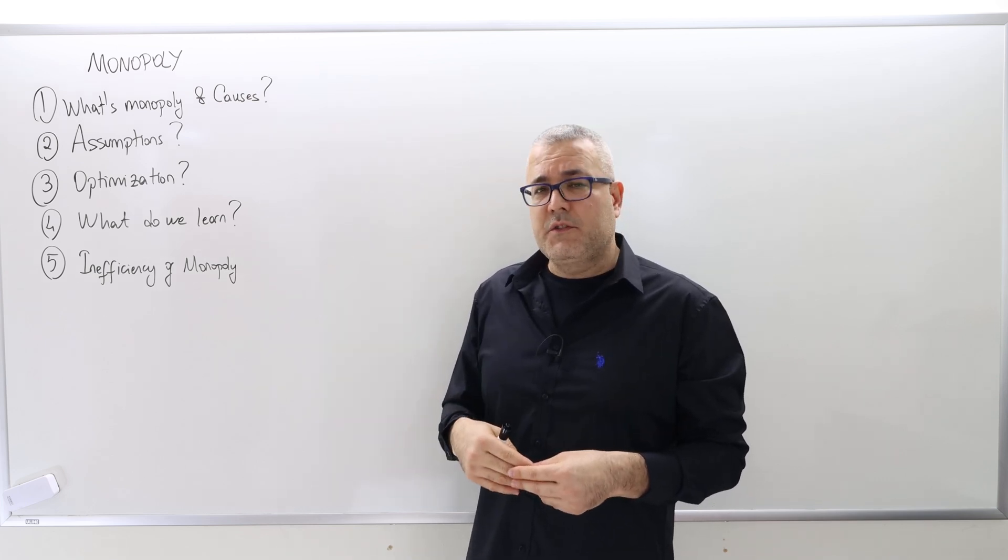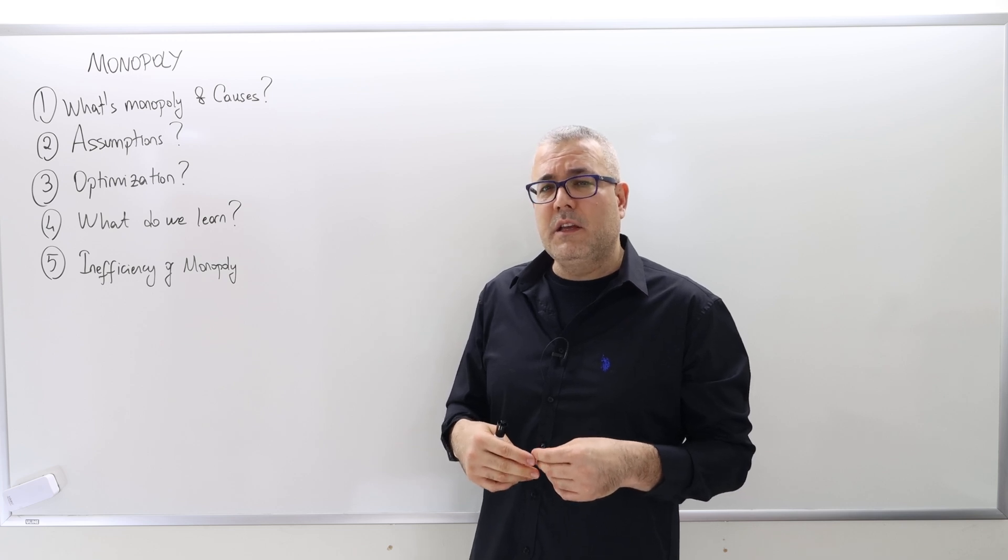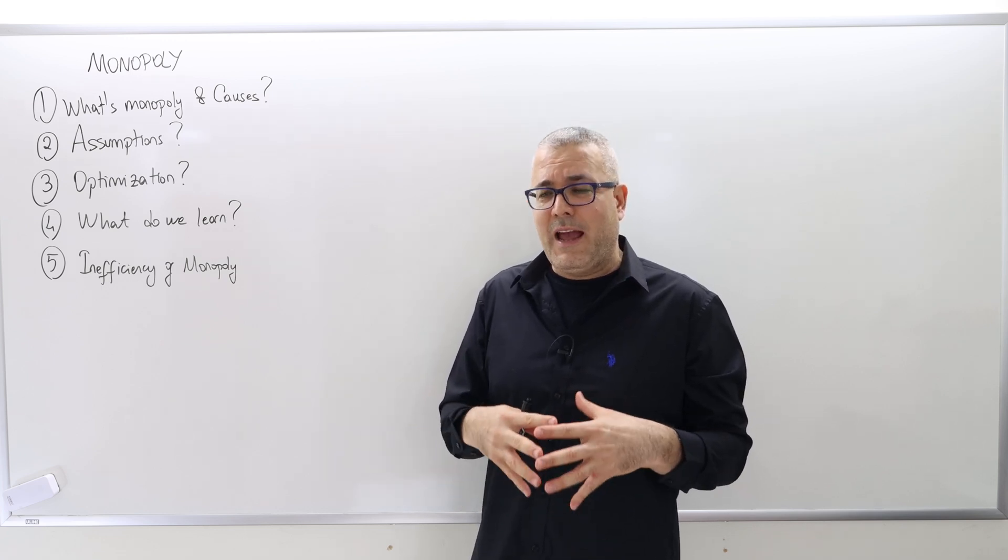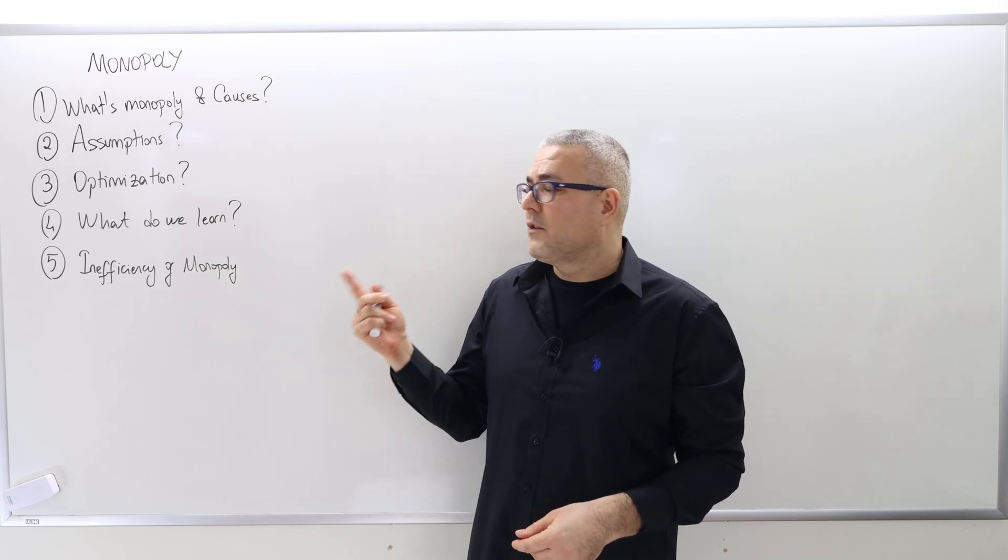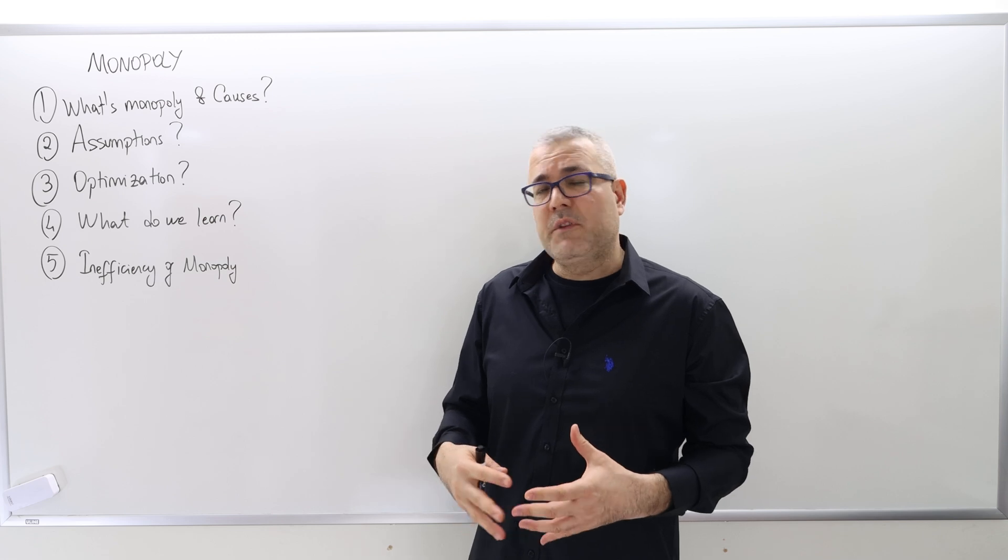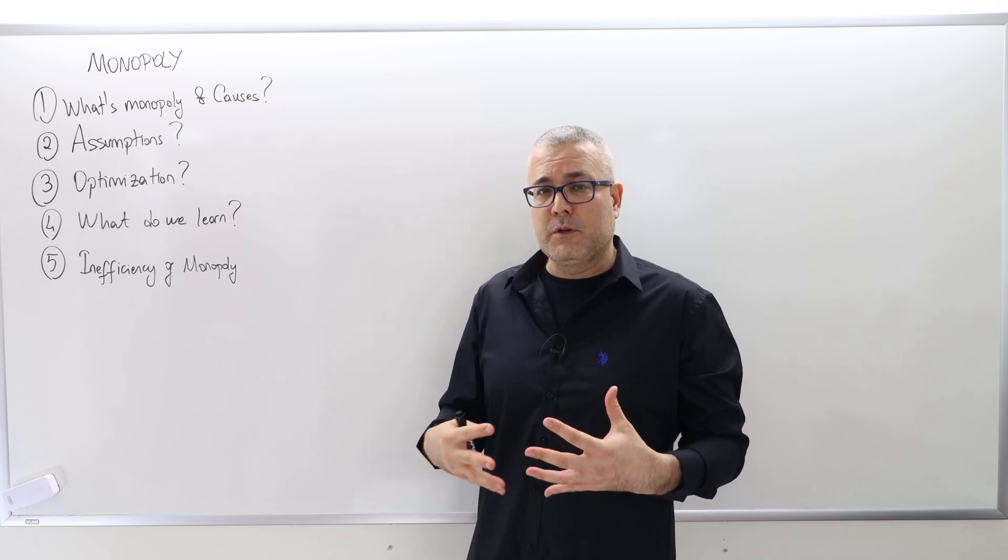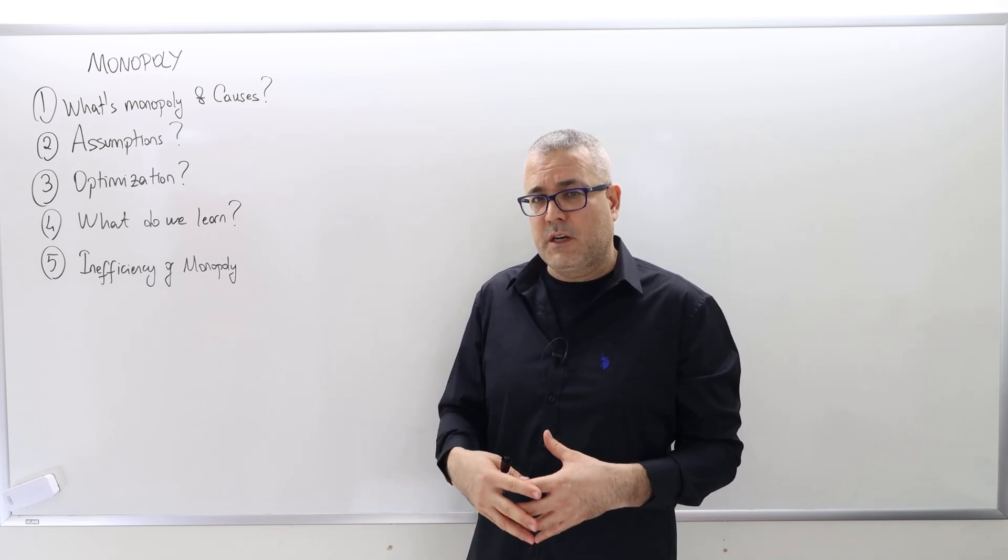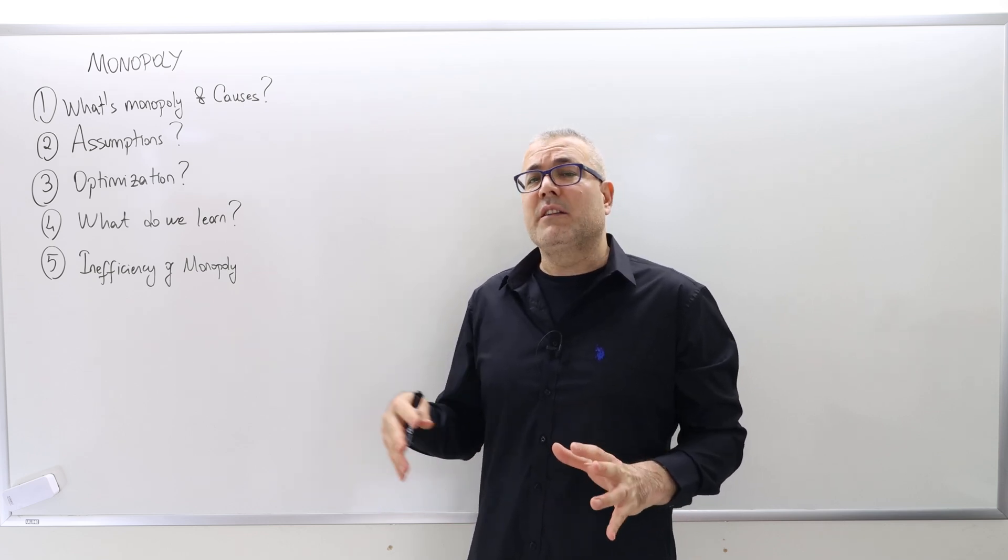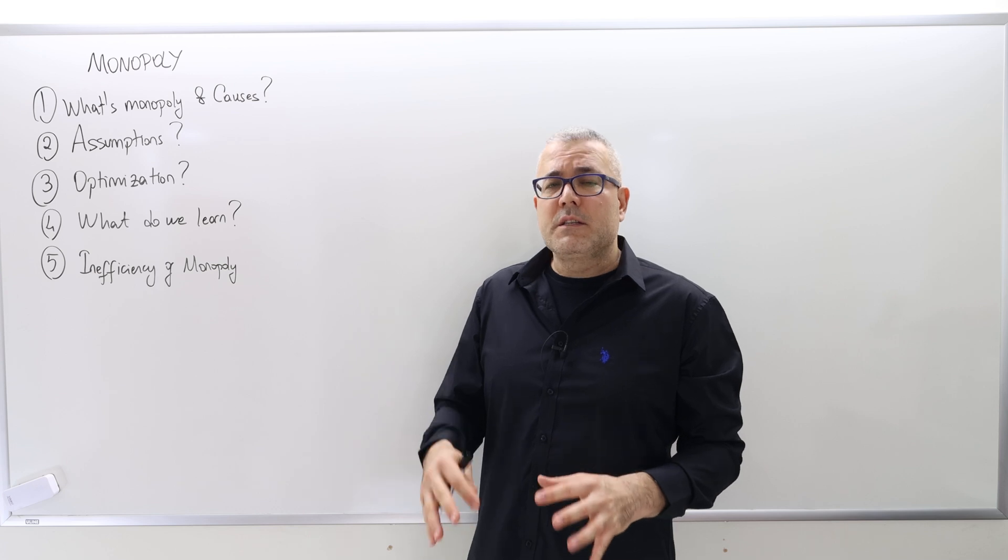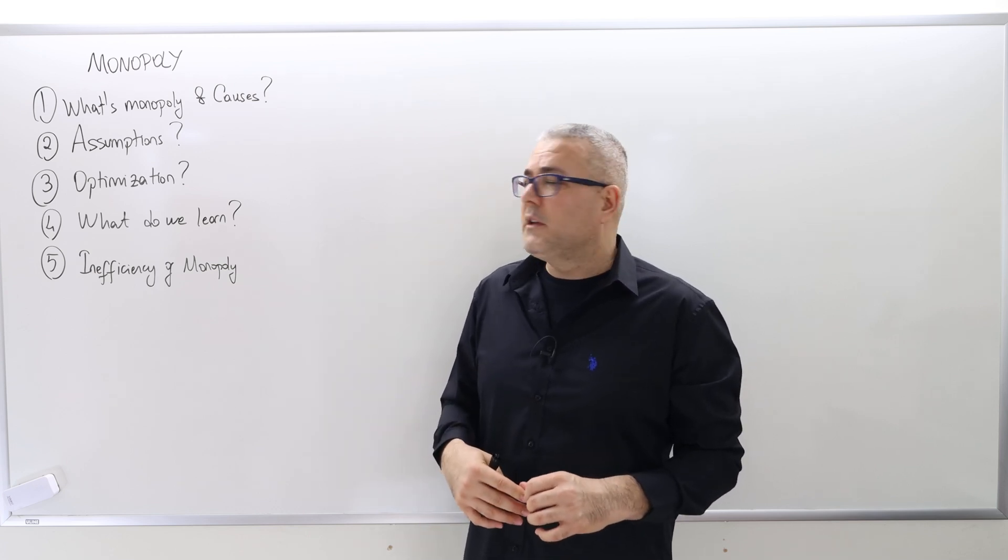The second question we're going to tackle is the assumptions on monopoly and how those assumptions differ from the perfectly competitive market assumptions. The third one is setting up the optimization problem for the monopolist. Most of the time, students are having difficulty setting up the optimization problem rather than solving it. So, this is what we're going to do in the third question.